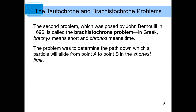Galileo wanted to construct a clock based on the tautochrone principle, but lacked the mechanical ability. Christiaan Huygens was the first to design and construct an actual working clock. He realized more precisely that if you take a cycloid, flip it upside down, and imagine a ball rolling back and forth, one cycle of that ball — whether rolling from a high point or a low point — takes the same amount of time. Huygens parlayed this into very effective timekeeping mechanisms.